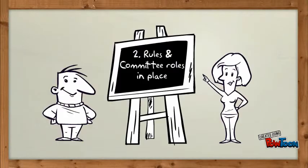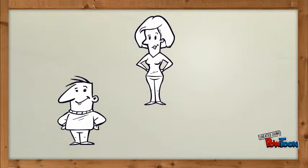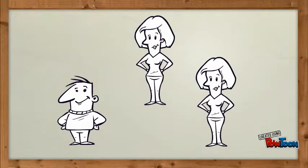Secondly, you need some rules and committee roles in place. This is going to set out what everyone in your organization is going to be doing, much like a job description. For example, you'll have your chairperson who leads the meetings, you'll have your treasurer who looks after all of the accounts, and you may have a secretary who minutes all of the meetings and takes care of all of the organization's administration.